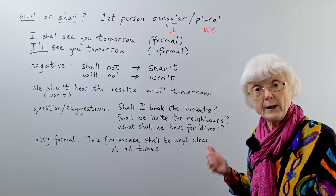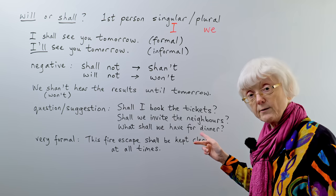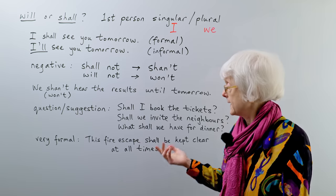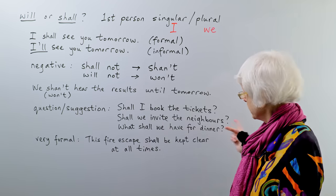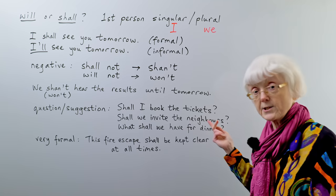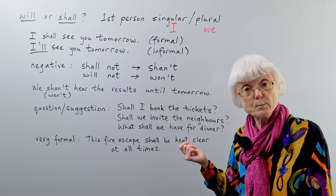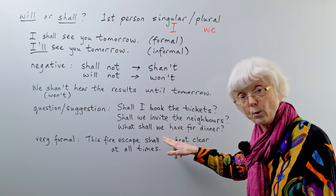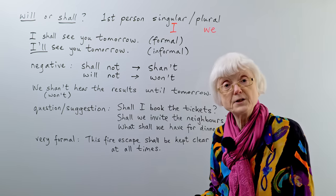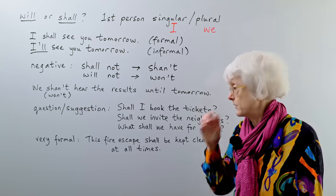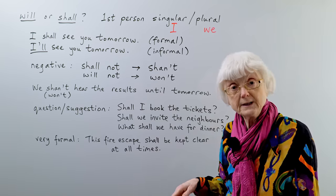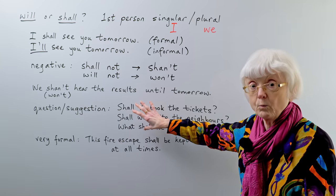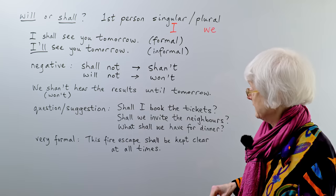And then shall we? Shall we, we're having a party. Shall we invite the neighbours? That's the natural way of saying it. So, you're asking a question, but you're also suggesting, shall we invite the neighbours? And then what shall we have for dinner? Not what will we have for dinner, that's not quite so natural. What shall we have for dinner. So, this is really the main way it would be used now.